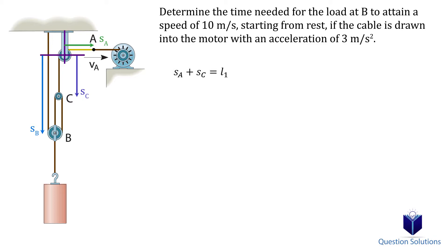We have s_A + s_C = l_1. Next, we have s_B + 2(s_B - s_C) = l_2, which simplifies to 3s_B - 2s_C = l_2. Let's tidy up the equations. Now we can take the derivative to get the velocity.